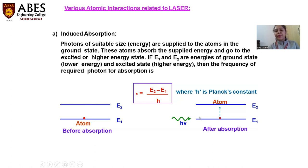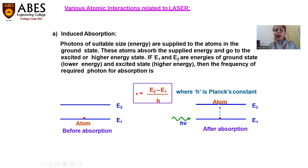Looking at the second diagram: we have applied a photon — the incident photon — on this system of E1 and E2. When this photon has energy h-nu equal to E2 minus E1, the difference between the two energy levels, this atom will jump up to the higher energy level E2. This means the atom has absorbed the photon, and this process is called absorption.